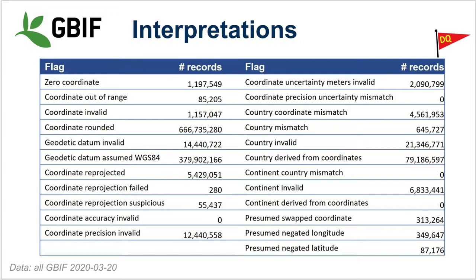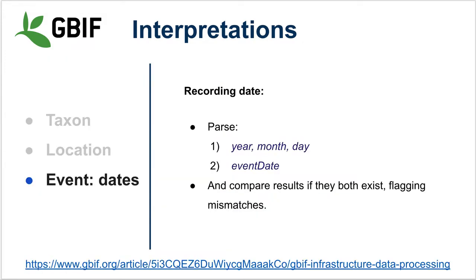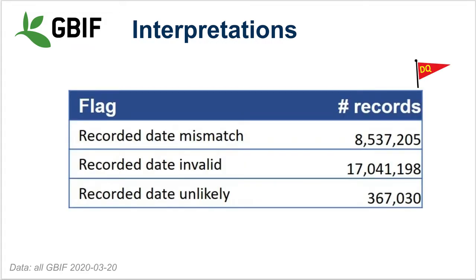GBIF provides a whole set of flags for location interpretation issues that you should review. For event information, specifically dates, GBIF parses the year, month, and day fields as well as the event date field, comparing the two sets to detect mismatches and flag them. Flags cover date mismatches, invalid dates, and unlikely dates — such as anything BC or before Linnaeus.